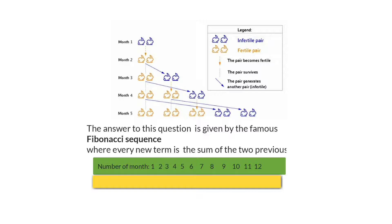In month one we have two rabbits — one pair — the infertile rabbits. Then the next month they are fertile and they reproduce a pair, which is fertile the next month and will reproduce a pair. So in month five we'll have one, two, three, four, five pairs of rabbits, which will then produce more rabbits.